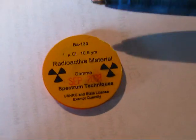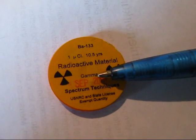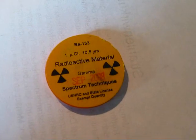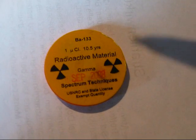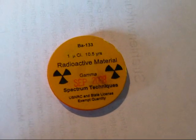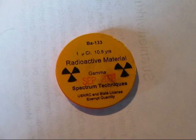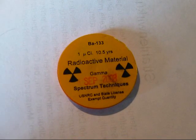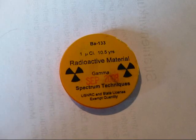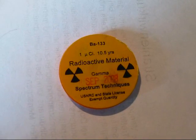It says Barium-133, a gamma emitter produced in September 2008, where it had an activity of one microcurie, and it has a half-life of 10.5 years. So within 10.5 years, that activity will be reduced to half the activity, so it will be 0.5 microcurie after 10.5 years.